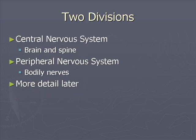There are two divisions of the nervous system. One is the central nervous system, which is made of your brain and your spinal cord. And then the other one is the peripheral nervous system, which is all your other bodily nerves that connect back to the brain and the spinal cord. There are dedicated lectures on each of these coming up later.